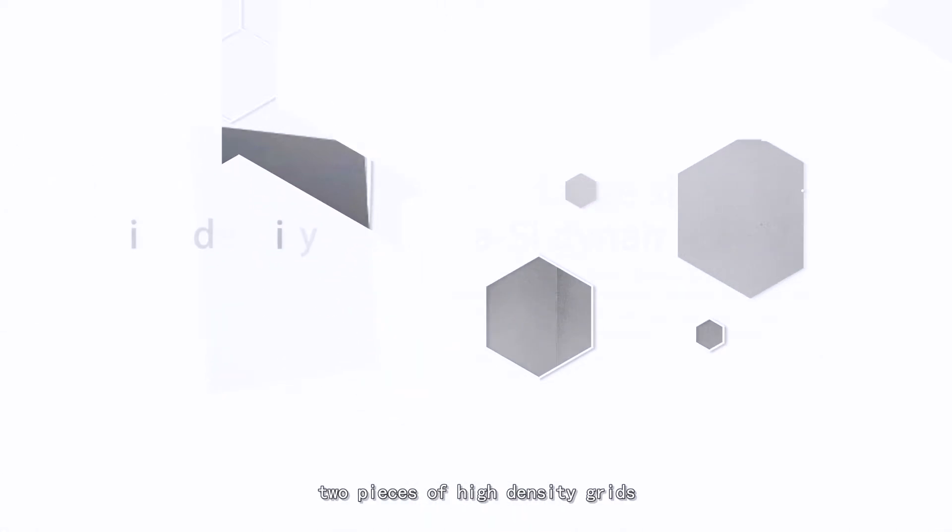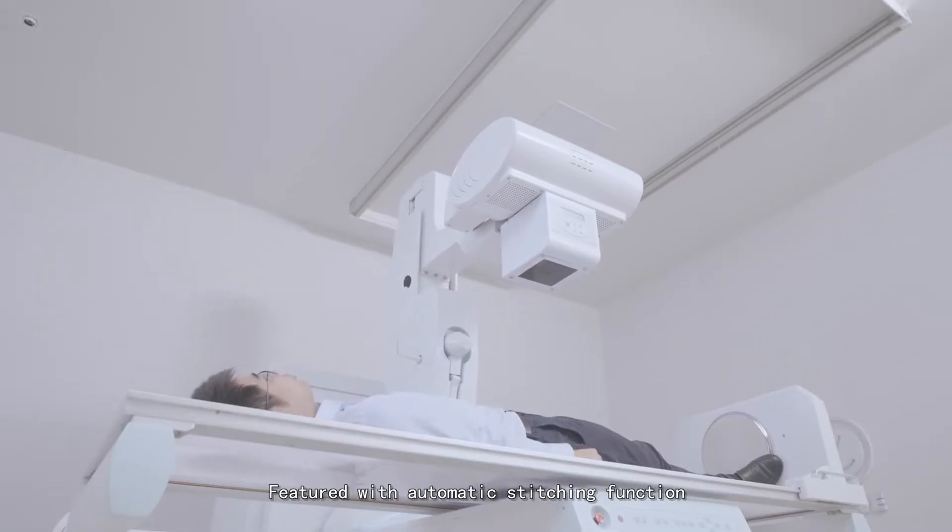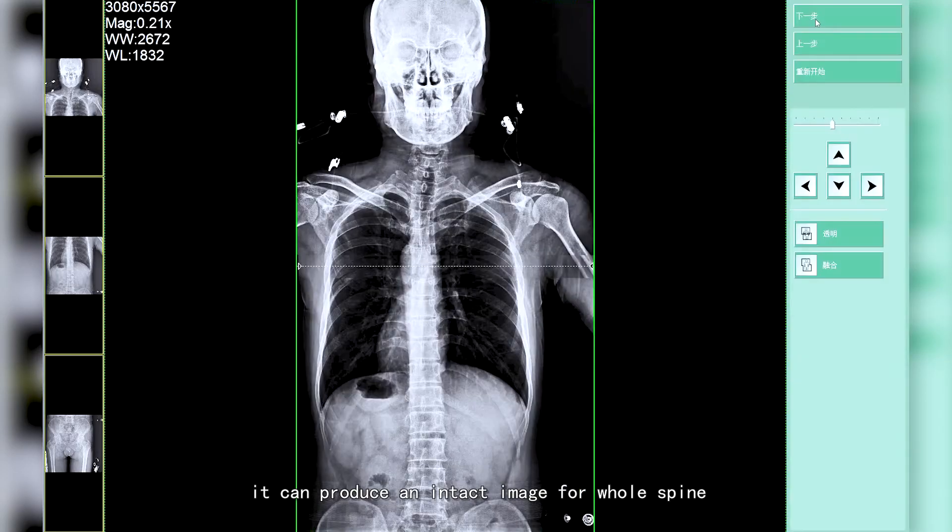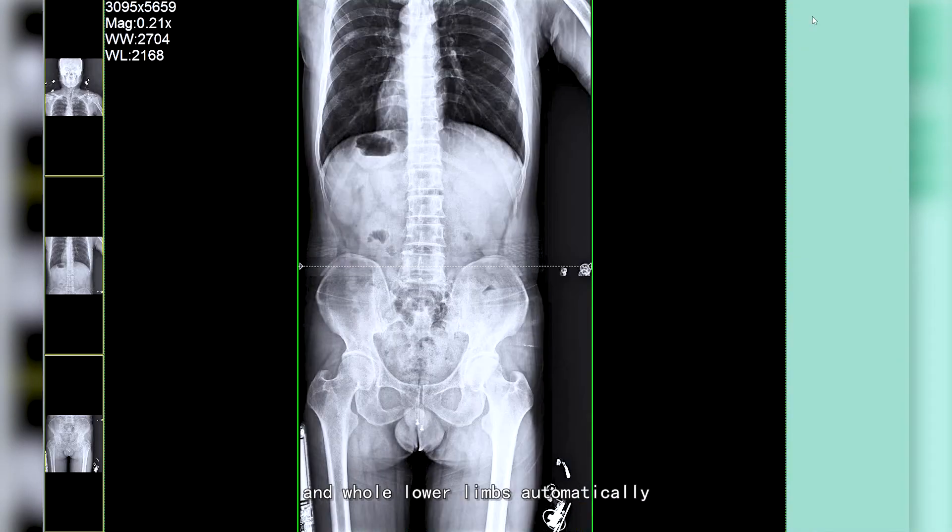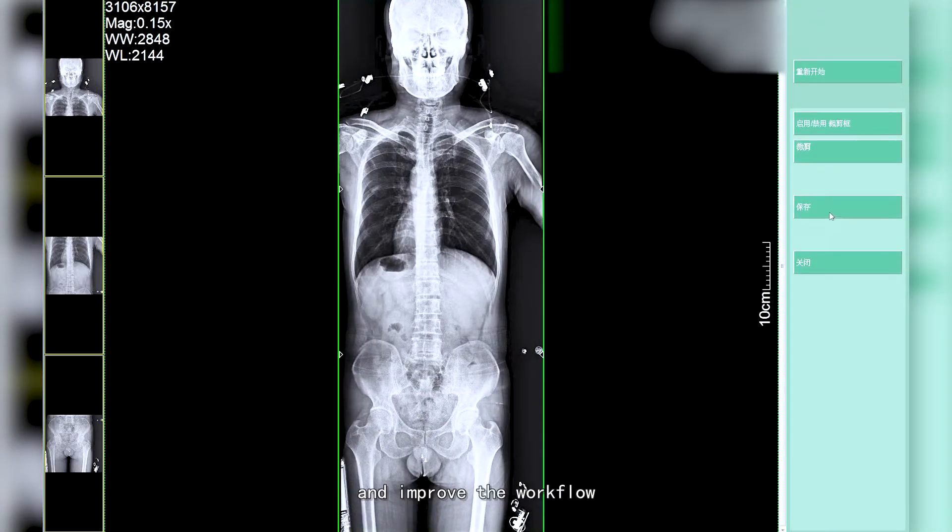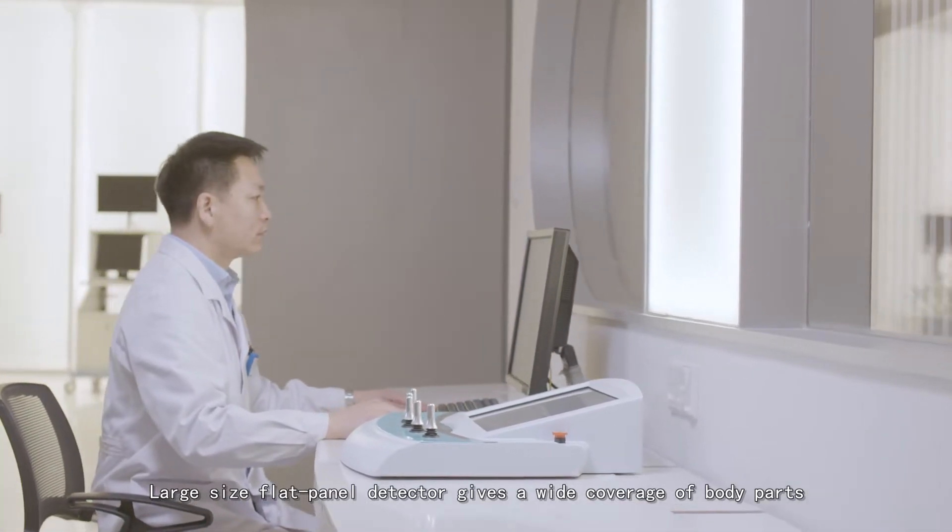Two high-density grids further improve image quality. Featured with automatic staging function, it can produce intact images for whole spine and lower limbs automatically, making doctors' work easier and improving workflow. The large-size flat panel detector provides wide coverage of body parts.